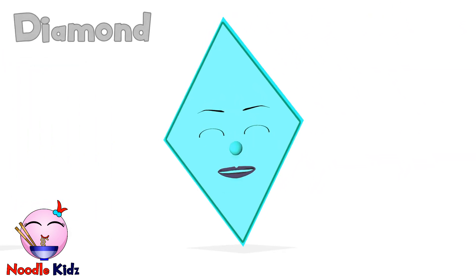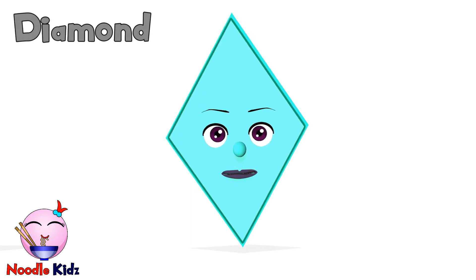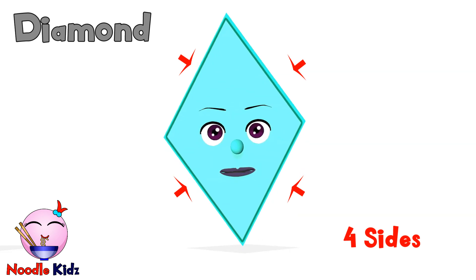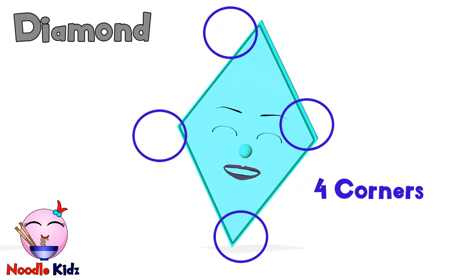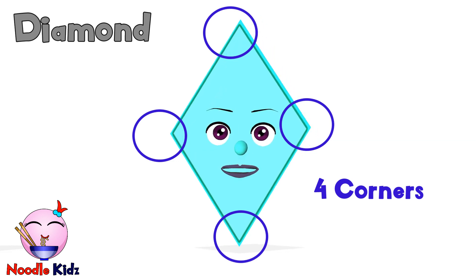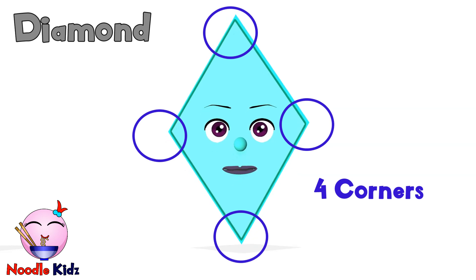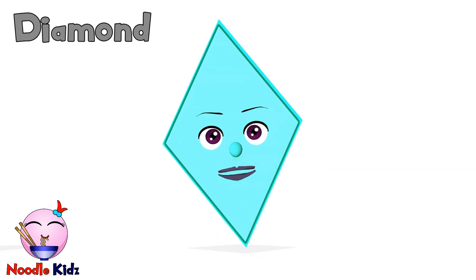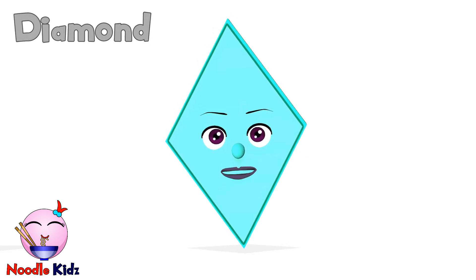My name is Diamond. Some people call me Rhombus. I have 4 sides: 1, 2, 3, 4. And I have 4 corners as well: 1, 2, 3, 4 corners. The corners, however, don't have the same angles as Square or Rectangle.